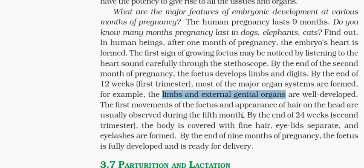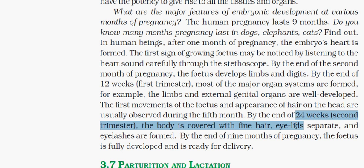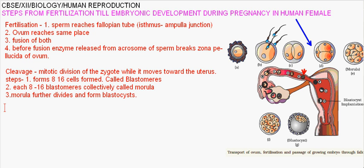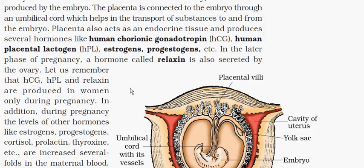The hormones involved during pregnancy are: human chorionic gonadotropin (HCG), human placental lactogen (HPL), estrogen, progesterone, and also during birth or just before birth, a hormone called relaxin is secreted by the ovary.